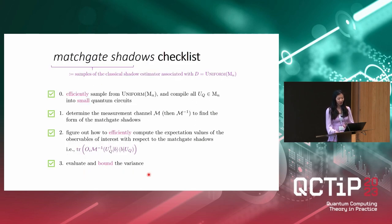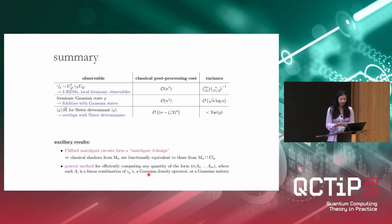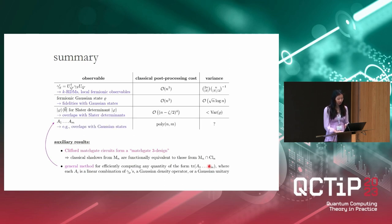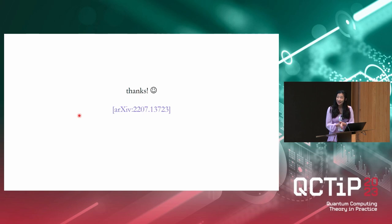To summarize: we've constructed efficient protocols for estimating several broad classes of fermionic observables. As side results, we proved that Clifford matchgate circuits form a three-design for the full matchgate group, implying we can use either ensemble for these protocols. This matchgate three-design result may also apply more generally in any setting involving random matchgate circuits. We also provide a general procedure for efficiently classically computing the trace of arbitrary products of certain types of fermionic operators, and one concrete application is estimating expectation values of any such product using the matchgate shadows. Thank you for listening.